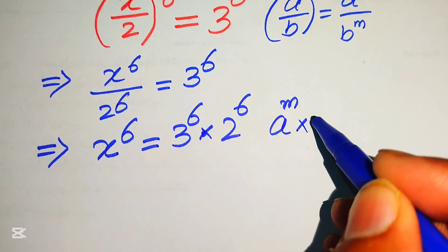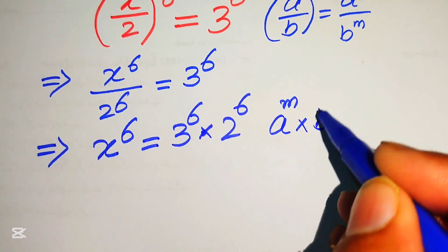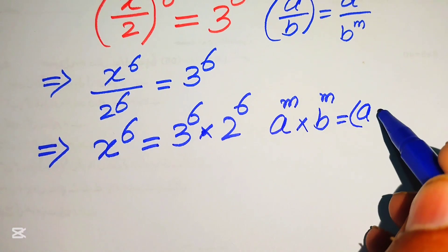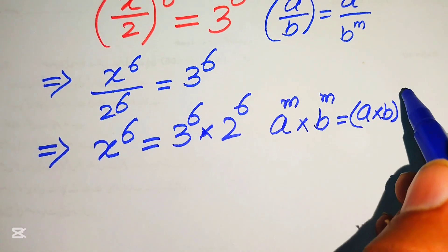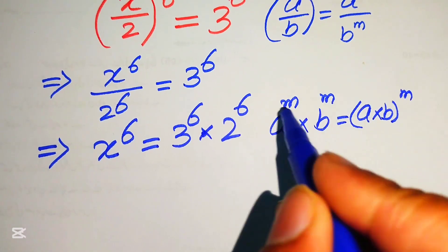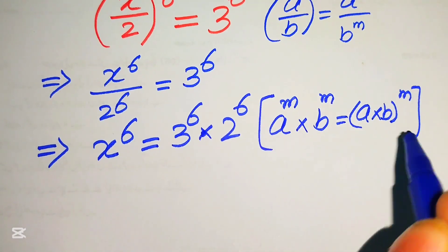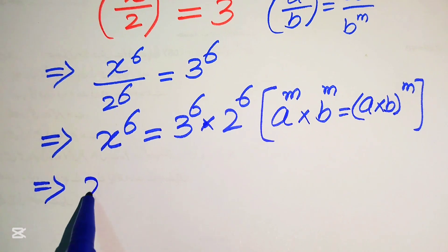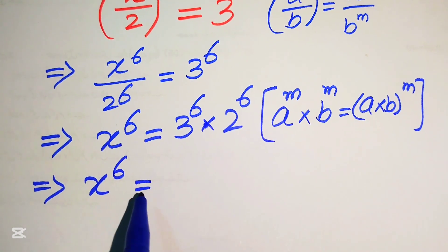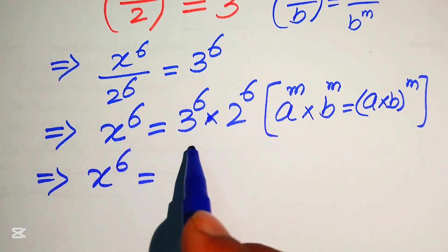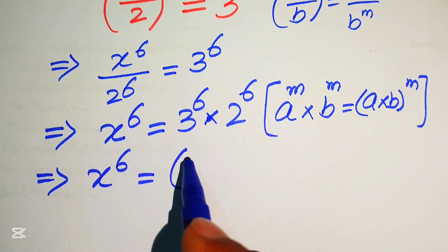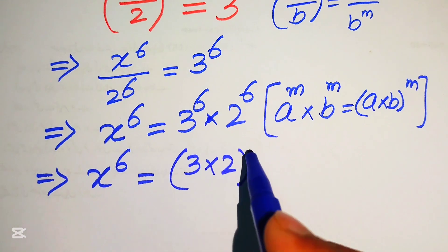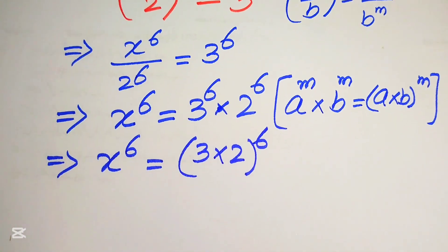We use the exponent law: a^m multiplied by b^m equals (a·b)^m. According to this law, we combine the exponents of these two terms, and it becomes x^6 = (3×2)^6.